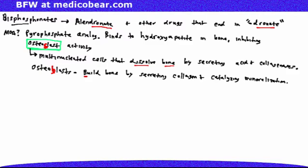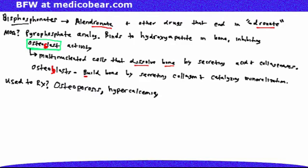So it should make sense that bisphosphonates are used to treat osteoporosis, hypercalcemia, and Paget disease of bone.